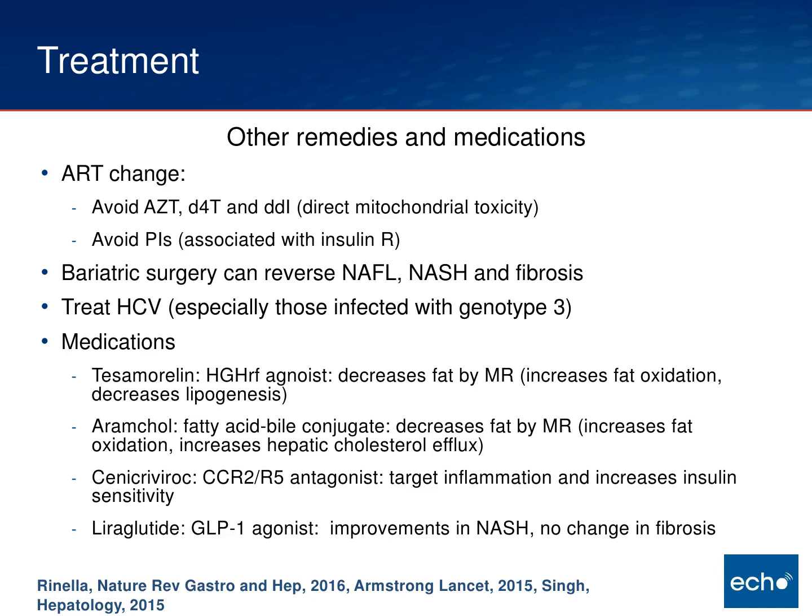For HIV-specific remedies: if a patient is on mitochondrially toxic medications — AZT, D4T, and DDI — switching off those is a good idea. If someone is struggling with insulin resistance and they're on a protease inhibitor, switching to a non-PI regimen would be reasonable. Bariatric surgery for people who are morbidly obese can reverse fatty liver, NASH, and fibrosis. Treating hep C — especially genotype 3 — can also reverse some of those fatty changes. Other medications are under study but haven't met criteria for clinical use yet.